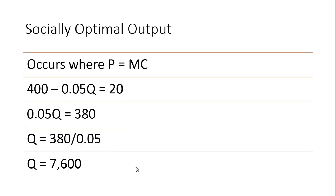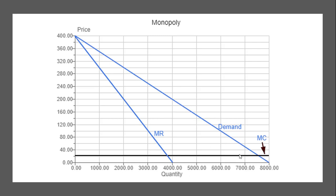Let's look at this graphically. I've graphed the inverse demand — the demand curve facing the monopolist — with a vertical intercept of 400 and a horizontal intercept of 8,000. Here is our constant marginal cost, a horizontal line at $20. We first found where marginal revenue intersects marginal cost, which is at 3,800 units. We then walked up to the demand curve and found the price was $210. The socially optimal output level occurs where marginal cost intersects the demand curve, at 7,600 units.